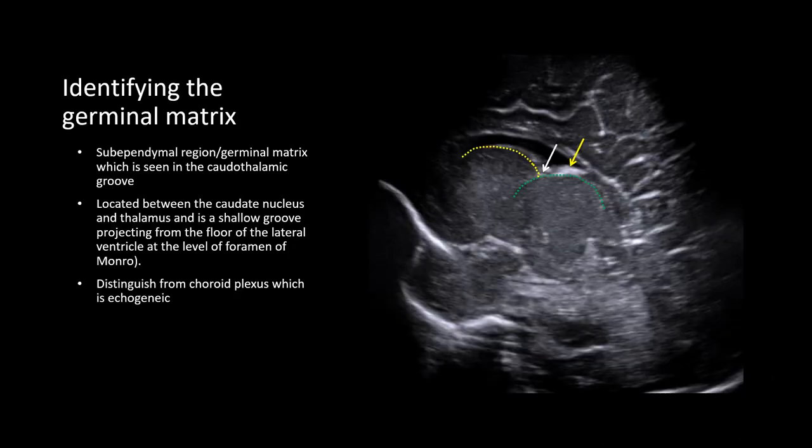The germinal matrix is located in the subependymal region, in what is called the caudothalamic groove — between the caudate nucleus, seen in the sagittal view outlined in yellow, and the thalamus, outlined in green. It is a shallow groove projecting from the floor of the lateral ventricle at the level of the foramen of Monro. Be sure to distinguish the germinal matrix from the choroid plexus, which is echogenic and indicated by the yellow arrow.